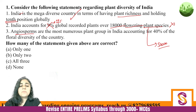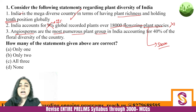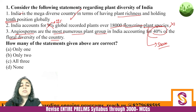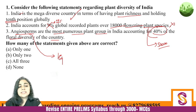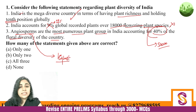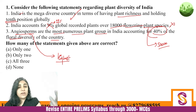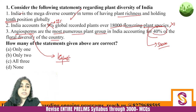For the third statement: angiosperms are the most numerous plant group in India, accounting for 40% of the floral diversity. What are angiosperms? Angiosperms are the highest evolutionary variety of flora. These are the kind of plants that bear fruits and flowers. So only the second statement is incorrect, making the answer 'only one incorrect.'